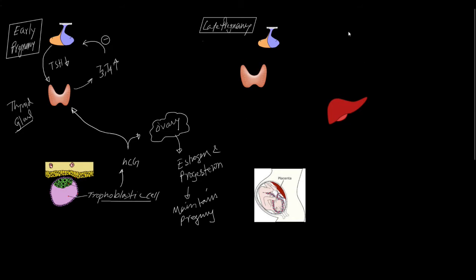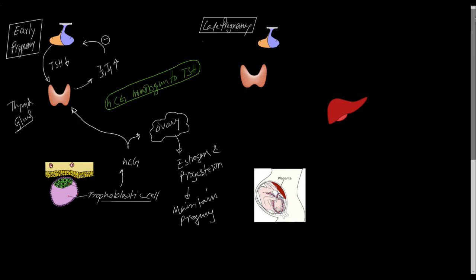So during the early part of pregnancy, due to the function of HCG, T3 and T4 synthesis may be increased a little bit. And as we know, T3 and T4 have a negative feedback on the anterior pituitary gland. So when T3 and T4 level is increased in response to HCG, then TSH synthesis by the anterior pituitary gland will be decreased. This is the physiological variation during the early part of pregnancy: T3 and T4 are increased a little bit, and TSH is decreased a little bit. So is this hyperthyroidism, or just a physiological variation during early pregnancy?